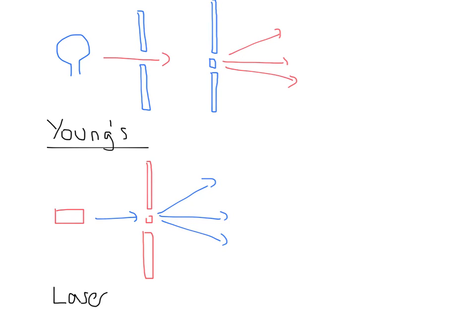Originally, Thomas Young, well over a century ago, had this experimental setup where he had a light bulb passing through a single slit, and then the light passed through the double slit, and then there was a screen where the fringes could be observed.